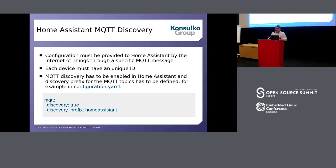For automatic discovery to happen, your IoT device has to provide a specific configuration message over MQTT. Each device must have a unique identification. MQTT discovery has to be enabled — here's an example in the configuration.yaml file, the main configuration file for Home Assistant. You have to set the broker, enable discovery, and set a discovery prefix. If you're using Hass.io, you don't even need to mess with the configuration file — it can be done from the user interface. Considering that we are at a developer conference, a configuration file is probably not a problem for people in the room.